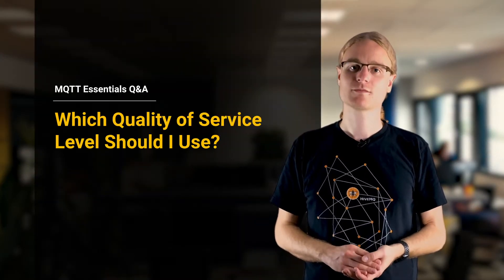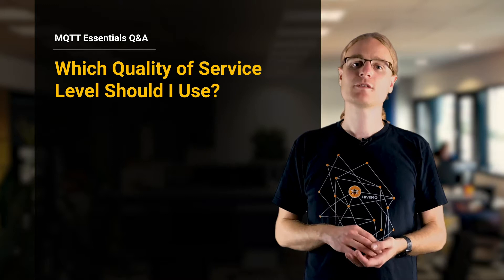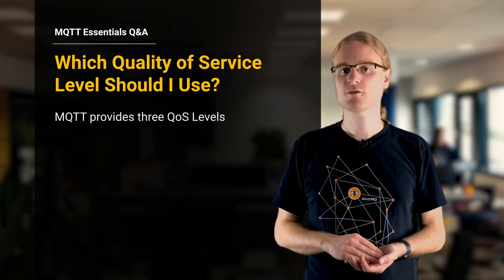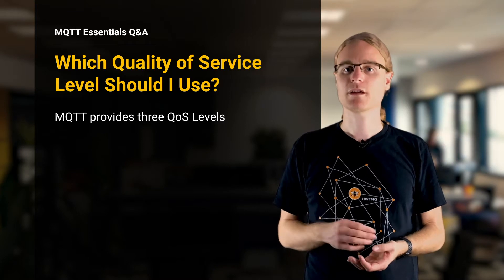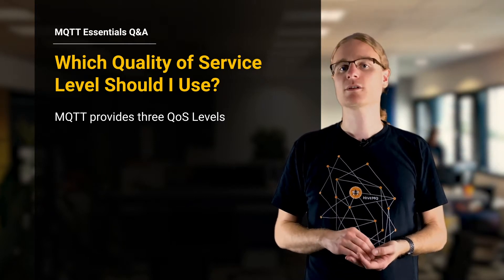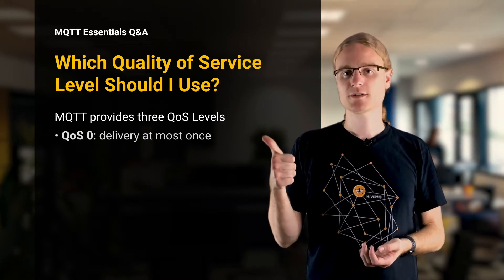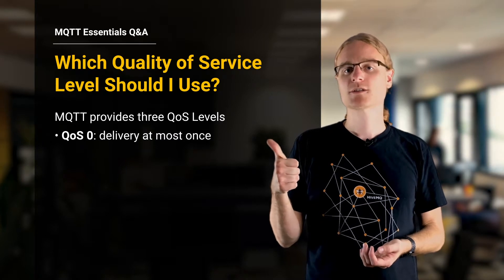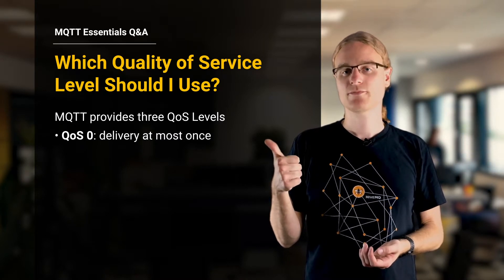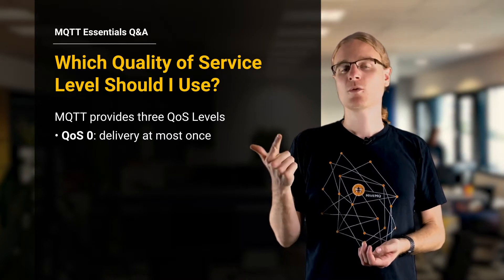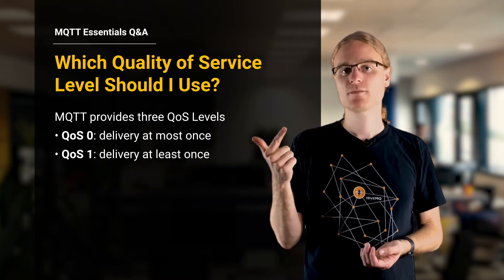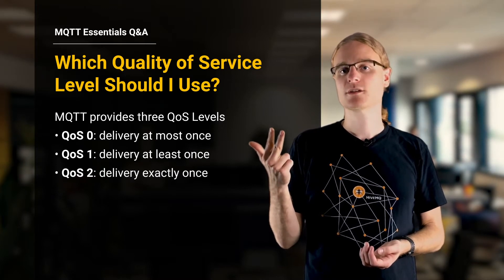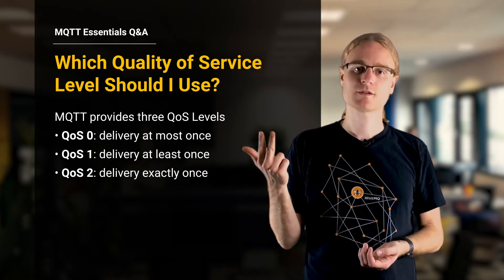Which quality of service level should I use? MQTT has three quality of service levels which are available for publishing and subscribing clients. There is quality of service level zero, which is at most once delivery. Quality of service level one, which is at least once delivery. And quality of service level two, which is exactly once delivery.